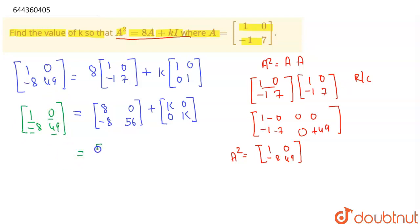So if I add these two, I will get [8+k, 0, 0, -8], and this one is 56+k.